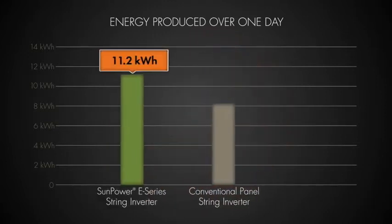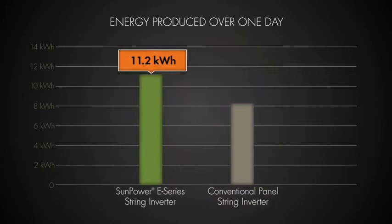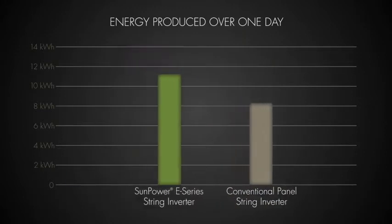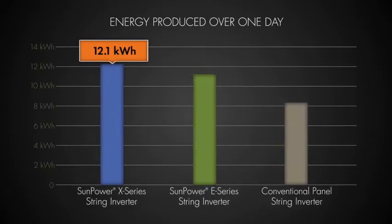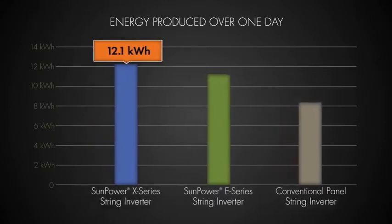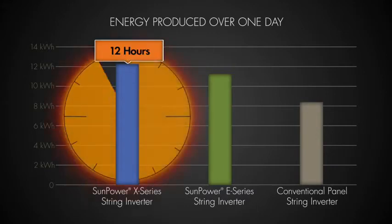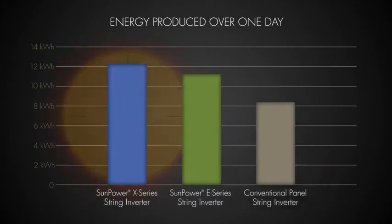The SunPower 20.4% efficiency panels produced 11.2 kilowatt-hours of energy. And the new SunPower X21 panels at 21% efficiency generated 12.1 kilowatt-hours of energy, enough to power the average home for about 12 hours.